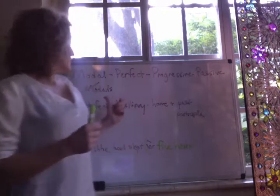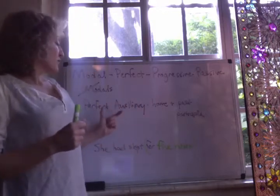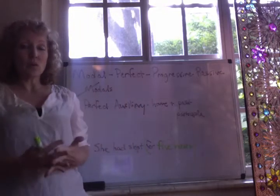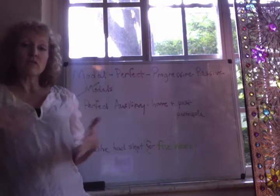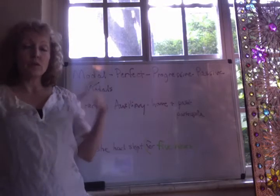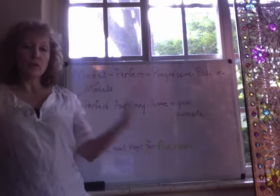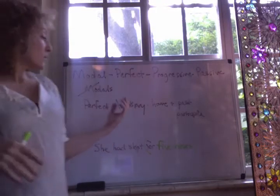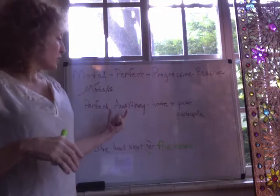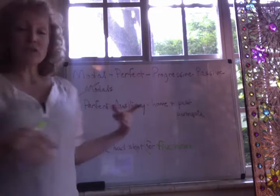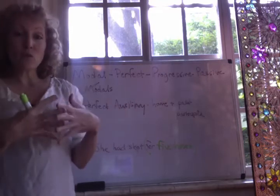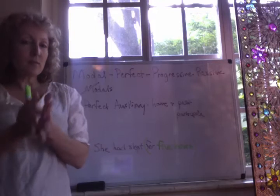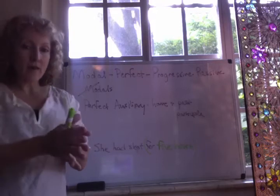Let's think about the perfect auxiliary because we've already talked about the modal. We know that modals are verbs like would, will, shall, should — all of those. So let's talk about the perfect auxiliary. The perfect auxiliary is formed always with some type of the verb 'have.' That's the tip-off that you have an auxiliary that's the perfect form.